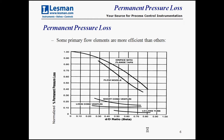Here's a chart showing different permanent pressure losses at different beta ratios for different primary flow elements. The normalized pressure loss axis shows 1 as 100% and 0.5 as 50%. Notice that the orifice plate is at the top of the scale with the highest permanent pressure loss. Down here we have low-loss tubes, typically some version of a venturi—short cone or long cone venturis. By definition, the venturi is a more efficient primary flow element than an orifice plate.